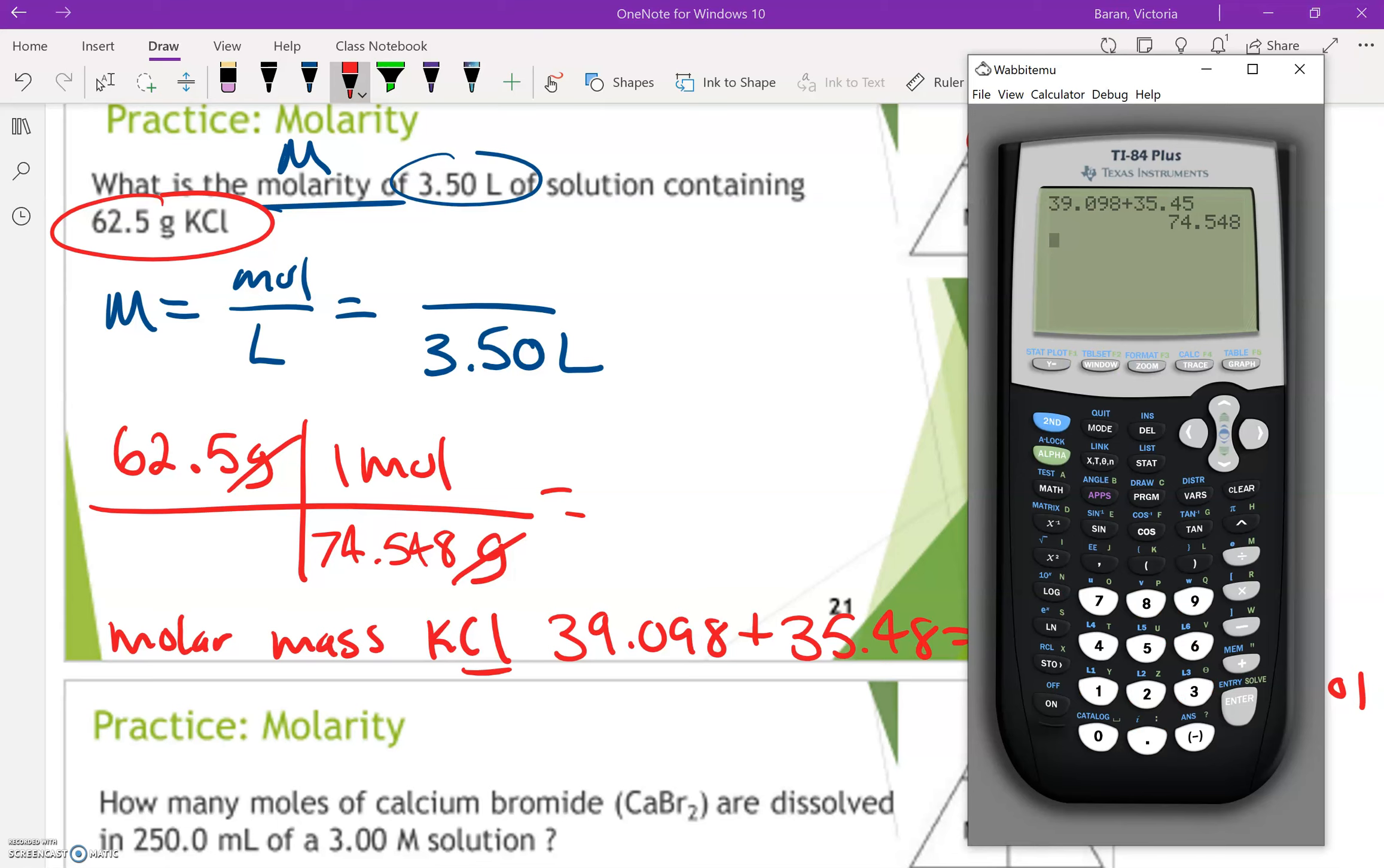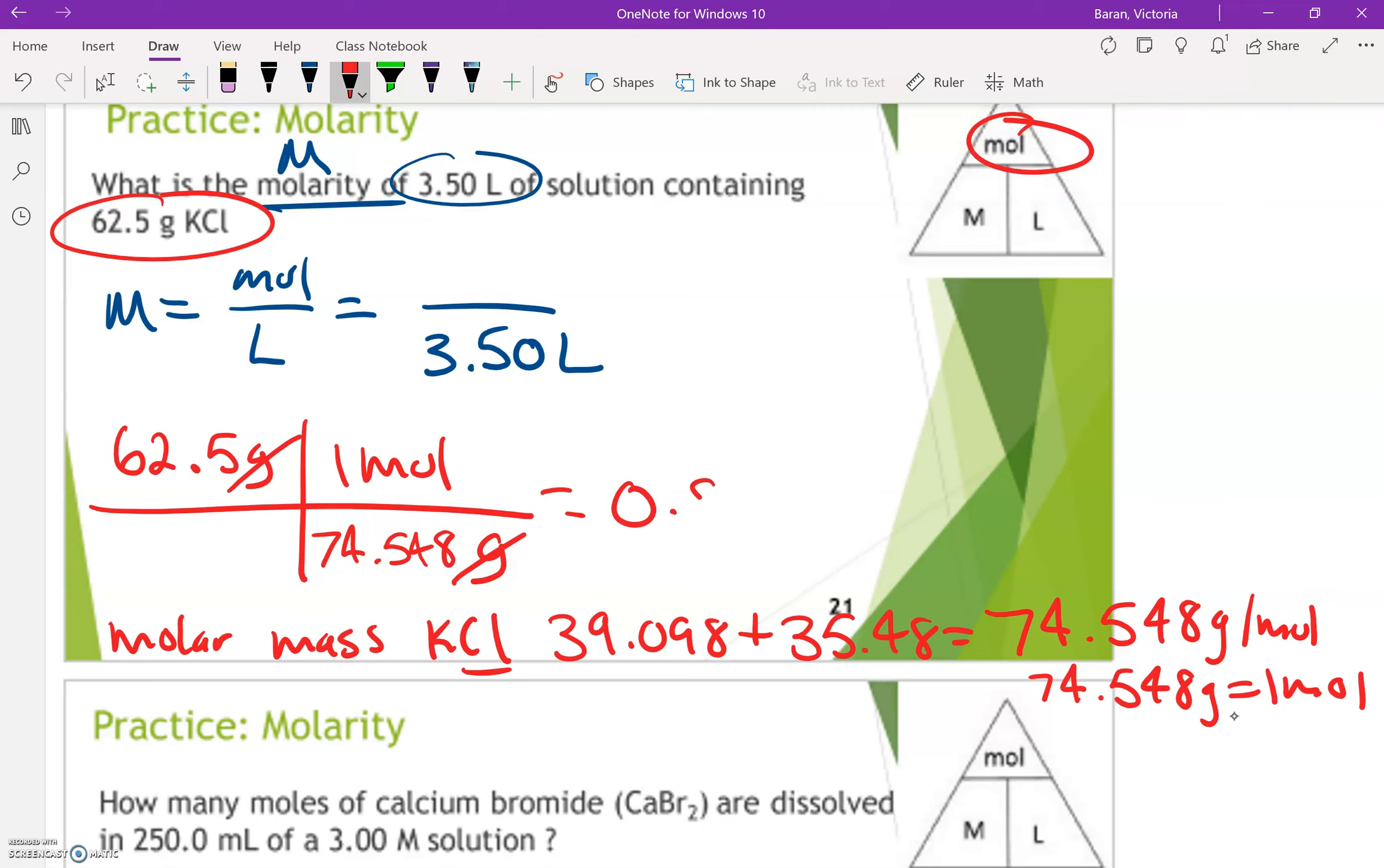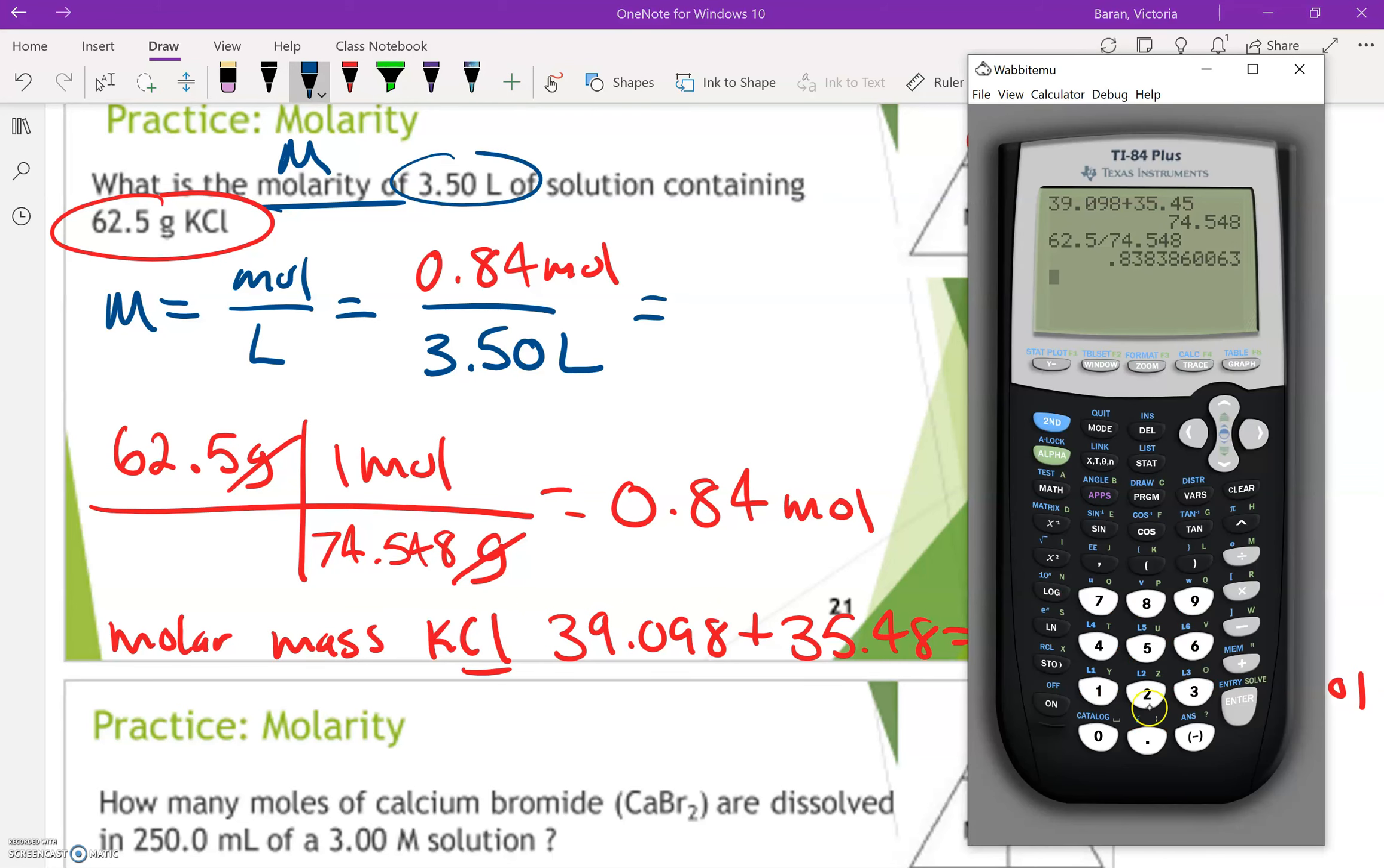So all I have to do then is 62.5 divided by 74.548. So I get 0.84 moles. Now I can plug this in and solve for molarity. So we had to do an extra step to find moles before I could plug it into that equation.